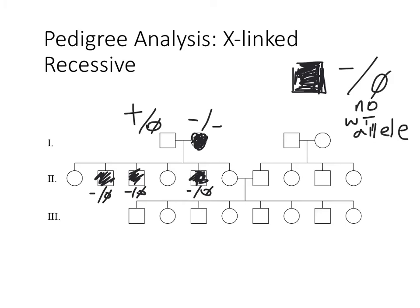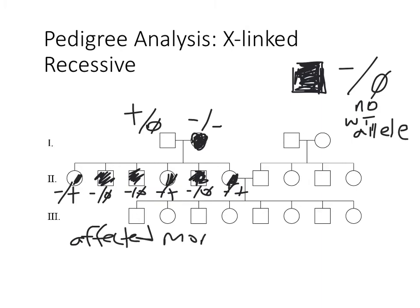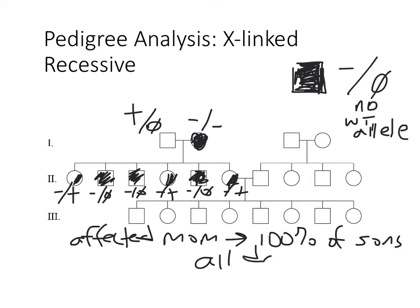In this cross with an affected mom (minus/minus), all males are affected — they're all minus/zero. They only have one minus, but there's no backup copy since there's no other X with a wild-type version. All daughters get a minus from mom guaranteed, but they also get dad's only wild-type X chromosome. So they're all heterozygotes — all carriers.